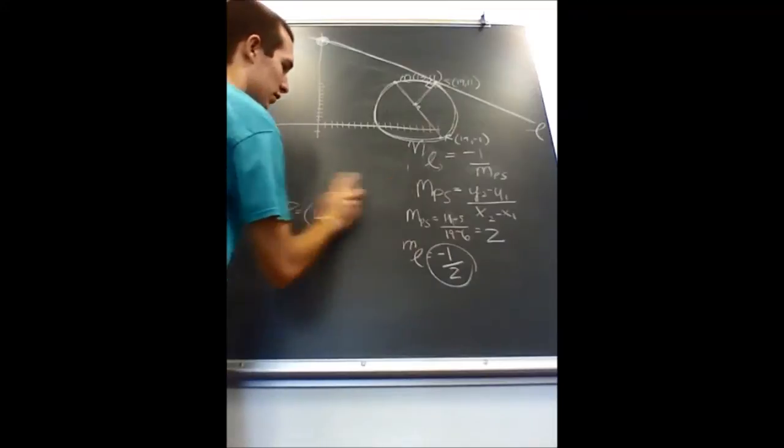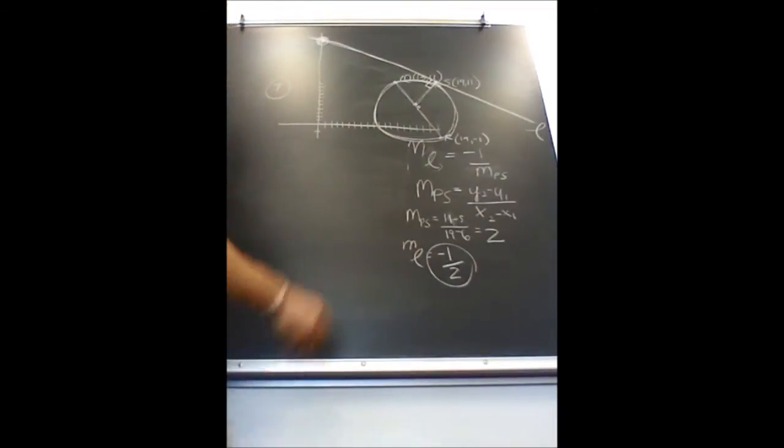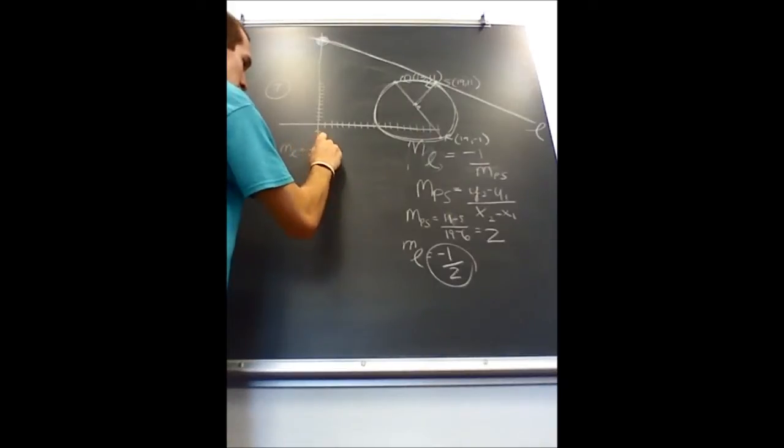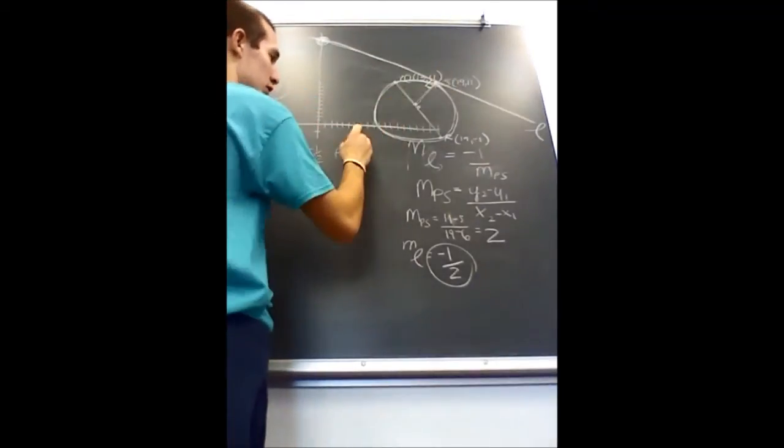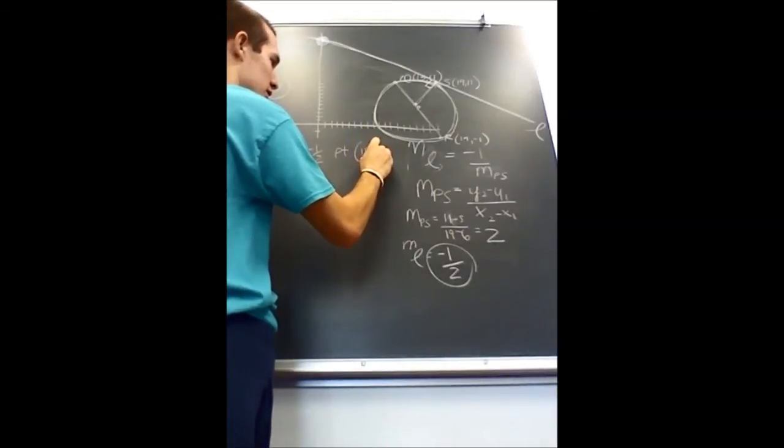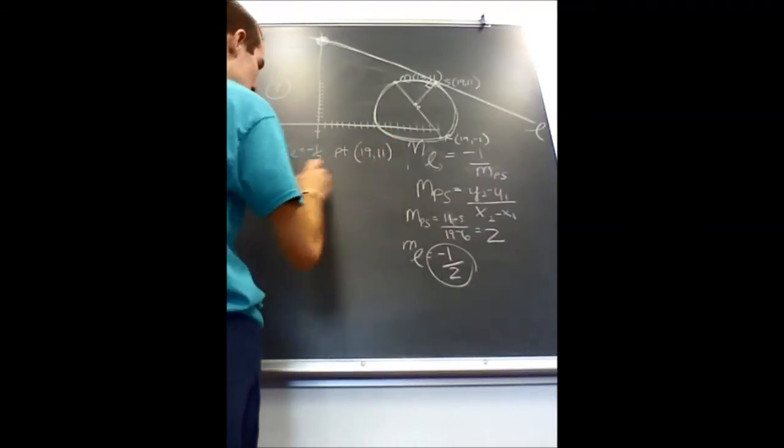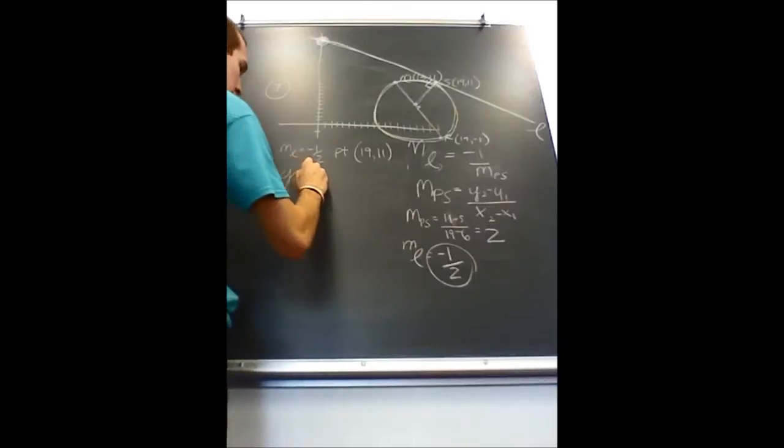So if we have the slope of a line and we have a point on the line, which we do, which would be point S, 19, 11, then we can make an equation for the line.